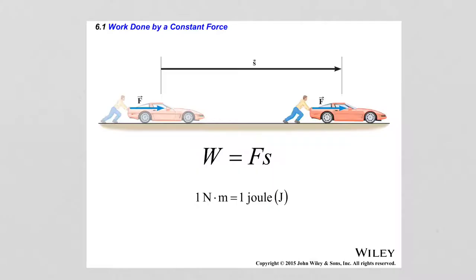The units for work are the product of units of force and the units of distance, so that would be newton-meters. However, there is a relationship between work done by a force and change in energy, which we will discuss later. For energy, the units used are joules, so it is convenient to use joules for work as well. Another reason for this choice is that torque also has units of newtons times meters, and so to avoid confusion, for work we are always going to use joules as the units.